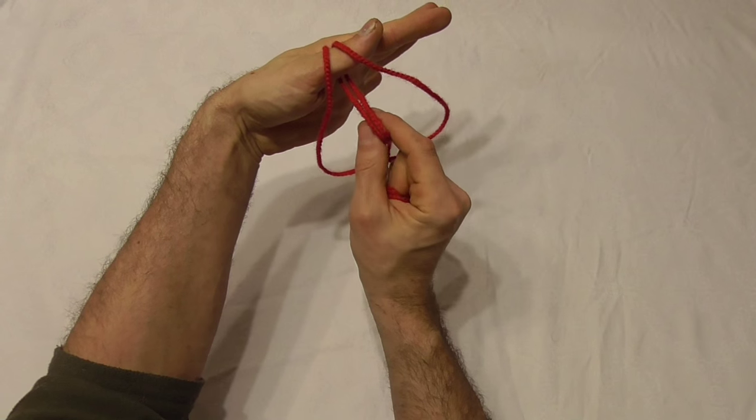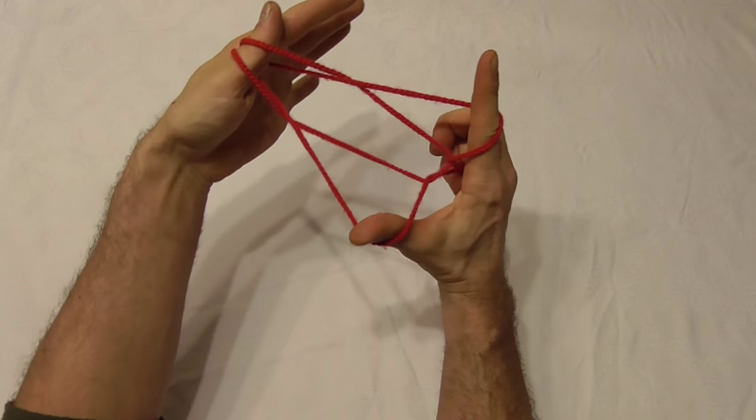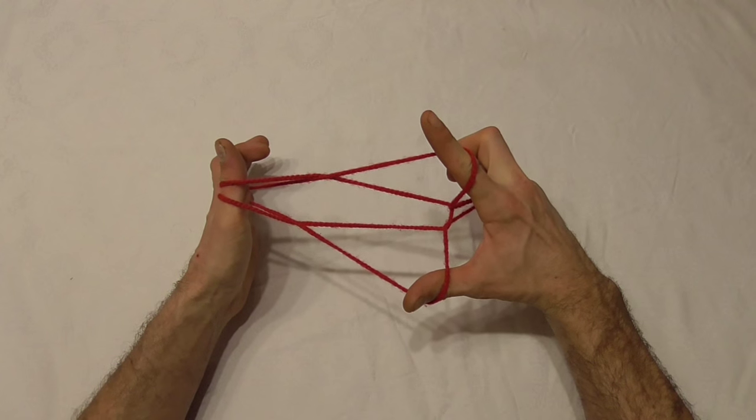and pull them through. Put the thumb and pointer finger into that loop and then pull it tight. There you should have your fighter jet.